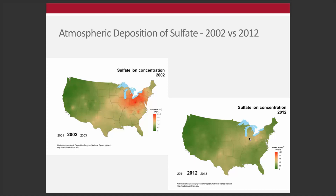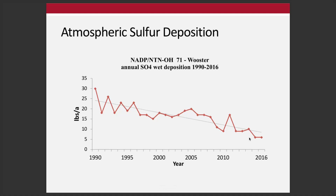Looking at pounds per acre of sulfur deposition from the Worcester NADP station, we can see from the nineties to close to the present day a general annual decline. We used to get somewhere around 25 pounds annually, and now we're down to maybe 10 — less than half of that. This potentially has major consequences in terms of sulfur availability.